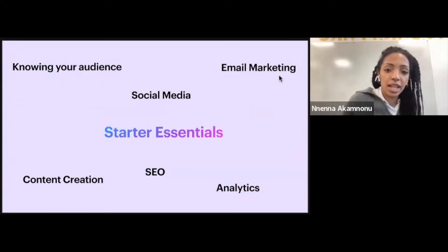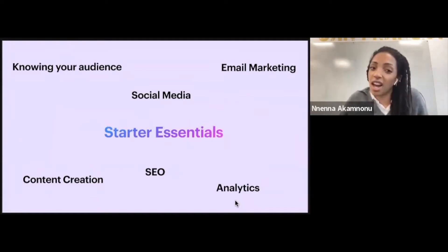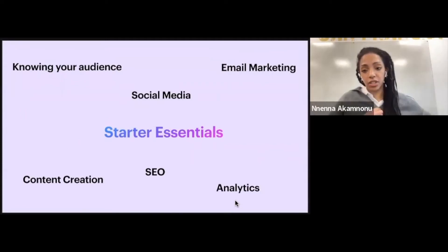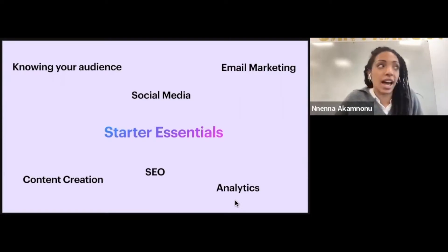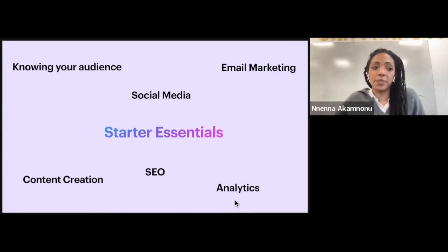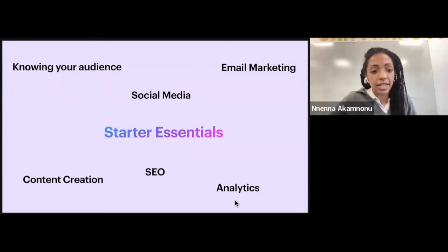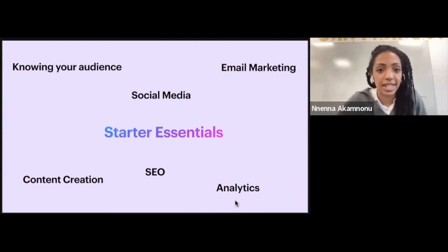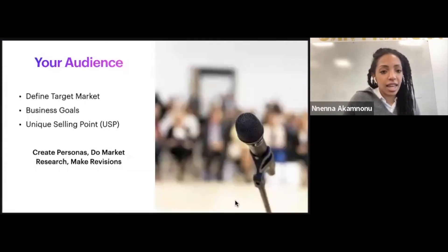What I'm going to go through today covers six areas: knowing your audience, social media, email marketing, content creation, SEO, and analytics. There's obviously a lot more to digital marketing than these six, but I thought these were simpler ones to touch on. It's also really important to have a well-designed, simple-to-use website — if someone lands on your website and it's taking ages to load or things are all out of whack, they'll just leave straight away. There's also planning involved, and more specific areas like influencer marketing, but we're just covering these six today.